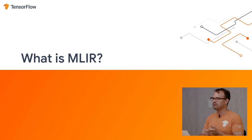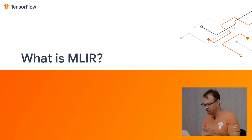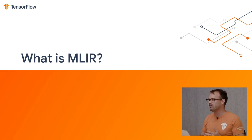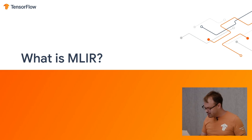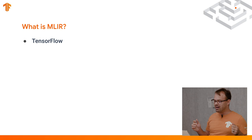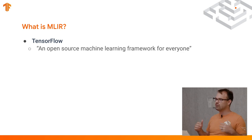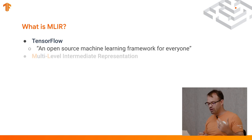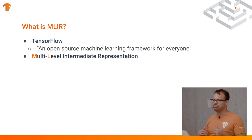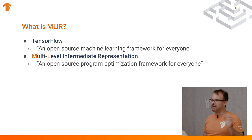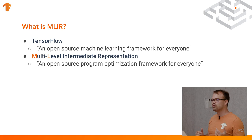So let's start with the main question: what is MLIR? Some people have said it's a little bit of a Rorschach test — you can say you can do anything with MLIR, and everybody has a different opinion about what it is. TensorFlow's goal is an open source machine learning framework for everyone. In the same way, MLIR, which stands for multi-level intermediate representation — with the ML not representing machine learning for a change — we're looking at an open source program optimization framework for everyone.